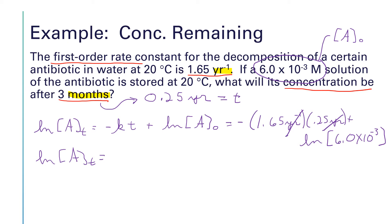I've got 1.65 times 0.25, but there's also a negative sign out in front, so I'm going to change the sign. And then we're going to add to that the natural log of 6 times 10 to the negative 3.